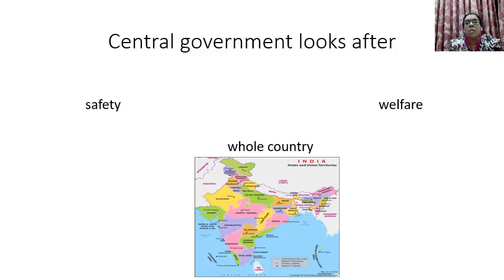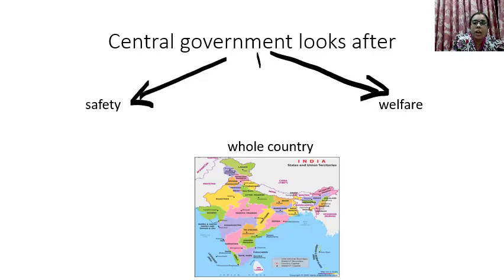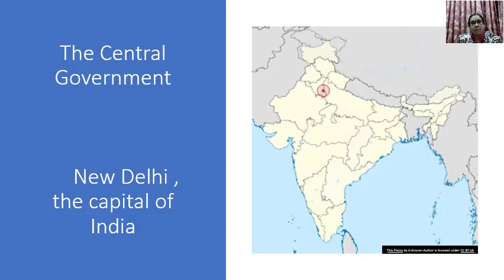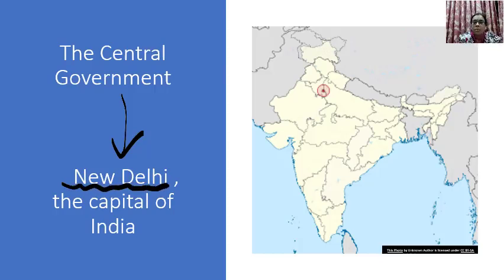Central government looks after the safety and the welfare of the whole country. The central government is based at New Delhi. New Delhi is the capital of India. You can see it indicated on the map here.